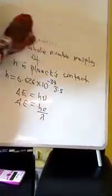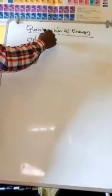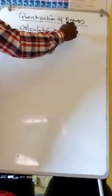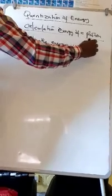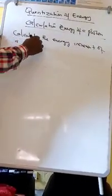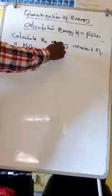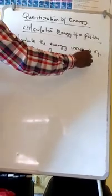Let's look at one example on how we can calculate the energy of a photon. Calculate the energy increments of a photon whose wavelength is 320 nanometer.